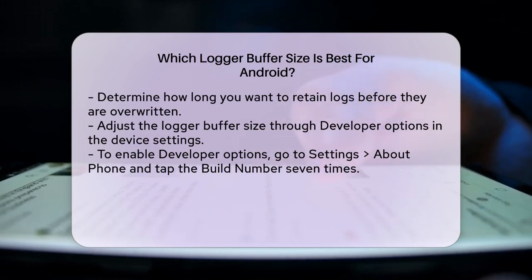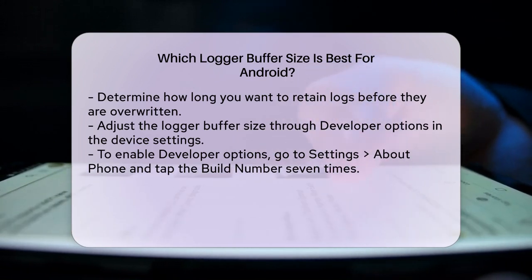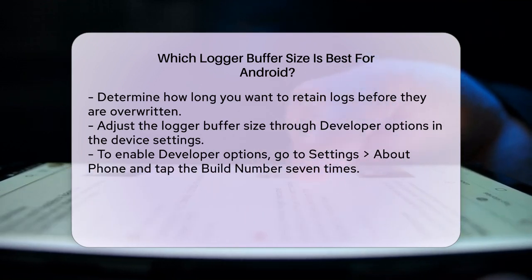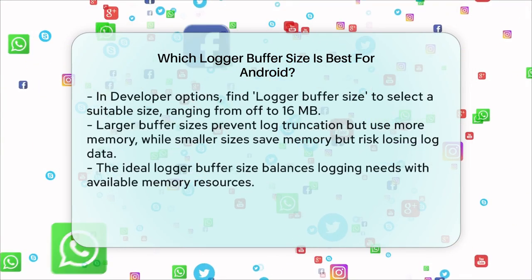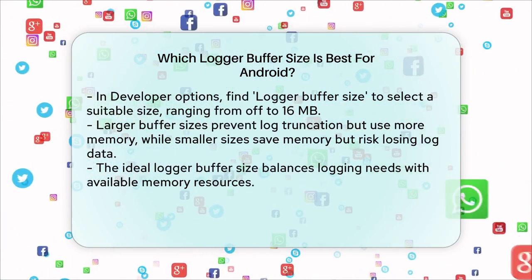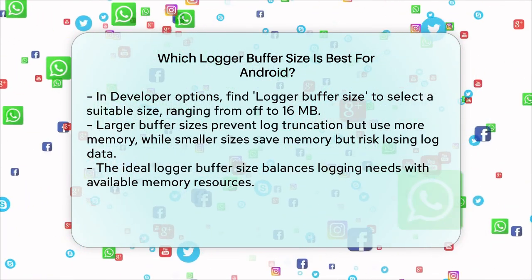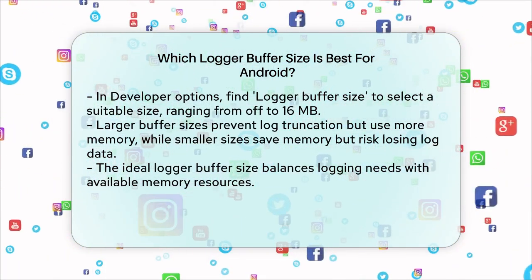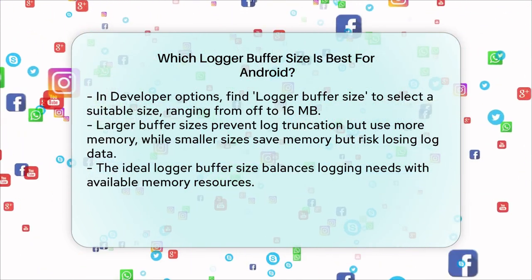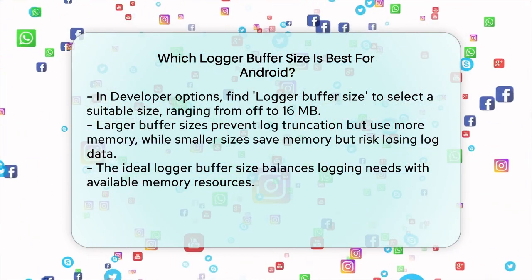Setting the logger buffer size to a larger value can help prevent log truncation, but it also consumes more memory. For example, if you set it to 16 megabytes, it will use more of your device's memory but ensure you don't lose vital log data. On the other hand, setting it to a smaller size or even turning it off can save memory but increase the chances of log truncation.